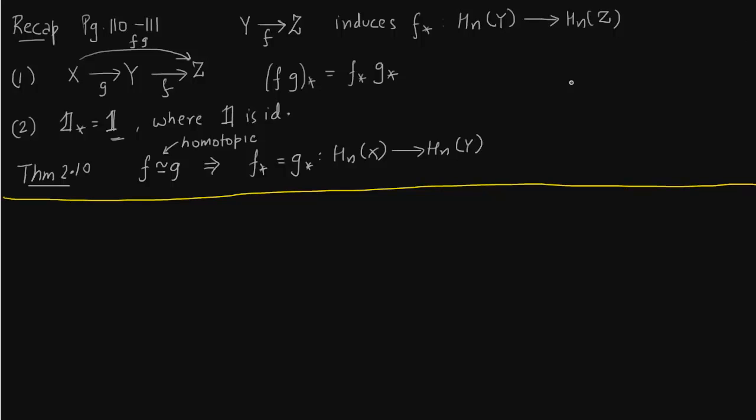Okay what is the definition of a degree? So again first we have to define a map f from one space to another space. So map f takes a sphere to a sphere. Yes so but you know H_n(S^n) is nothing but integers.